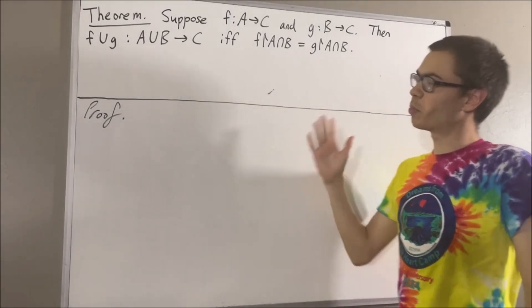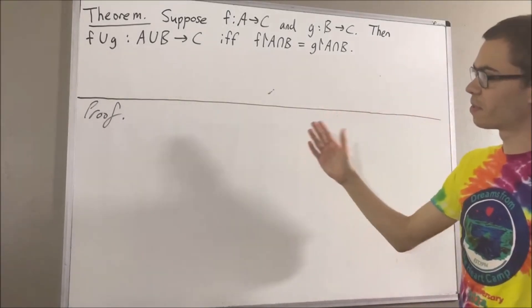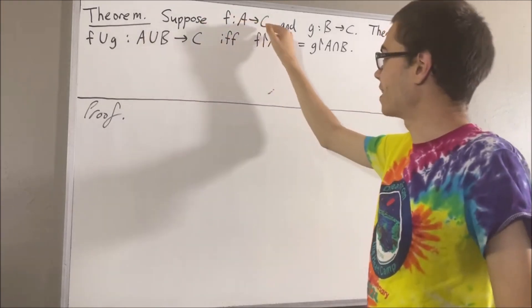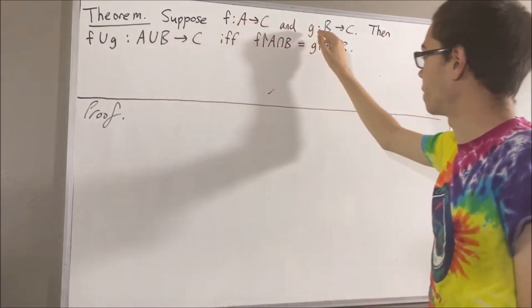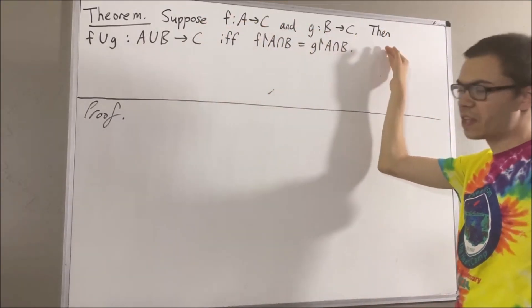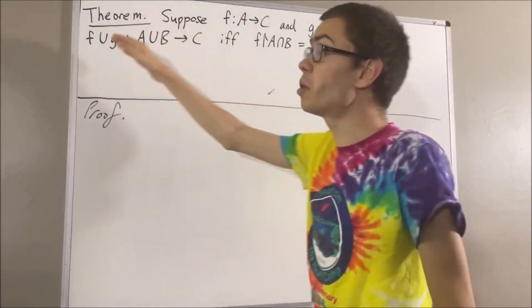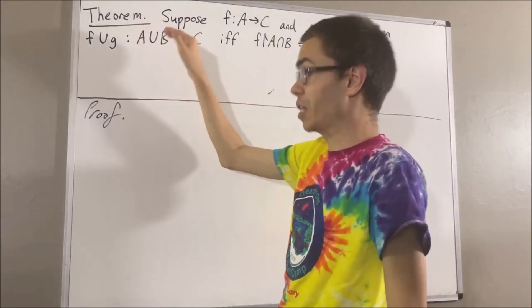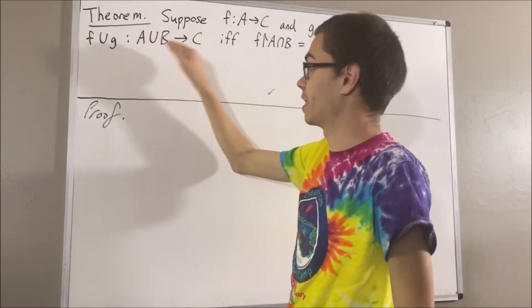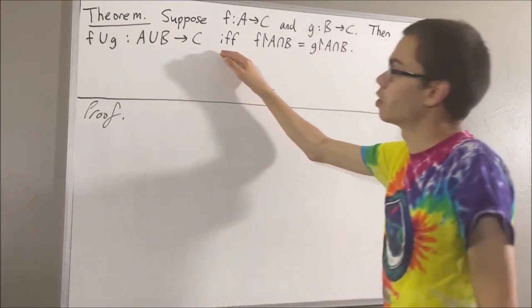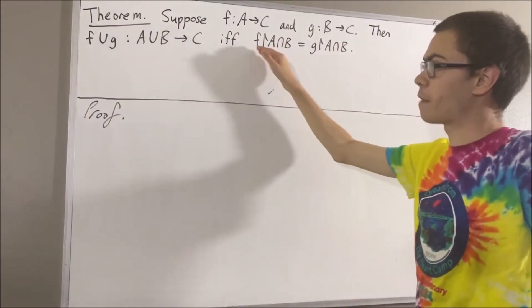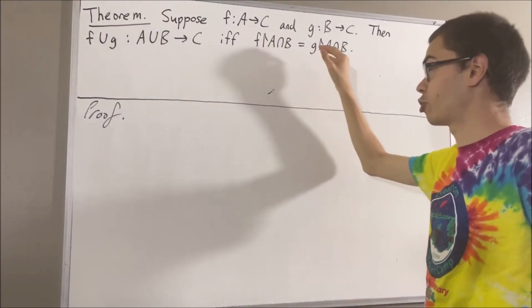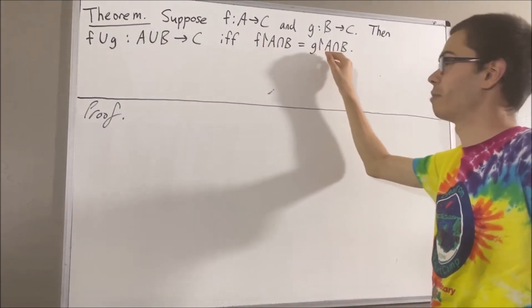In this video, we are going to prove the following theorem. Suppose f is a function from A to C and g is a function from B to C. Then, the union of f and g is a function from the union of A and B to C if and only if the restriction of f to A∩B is equal to the restriction of g to A∩B.